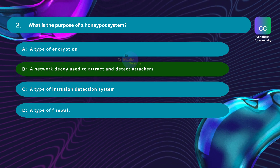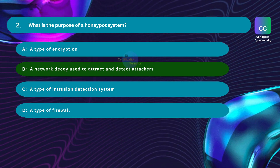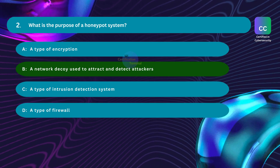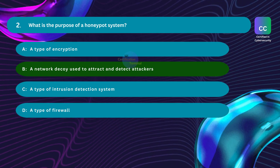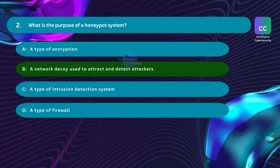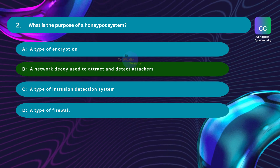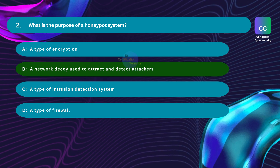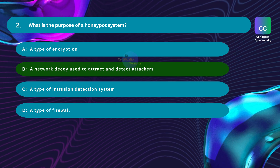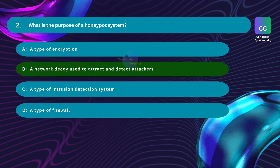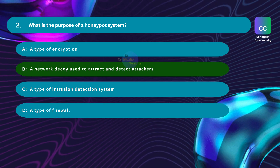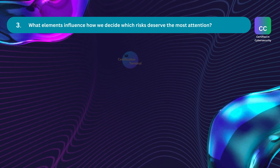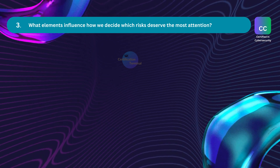Honeypots are intentionally deployed within a network to mimic valuable systems or services, enticing attackers to interact with them. By doing so, security professionals can observe and analyze the attacker's behavior, tactics, and tools, thus enhancing overall network security. This accurately describes the primary purpose of a honeypot system.